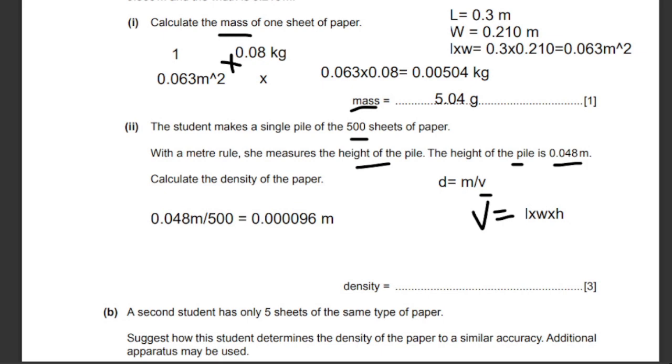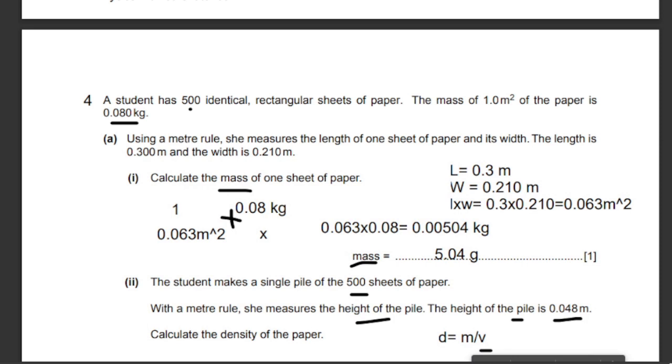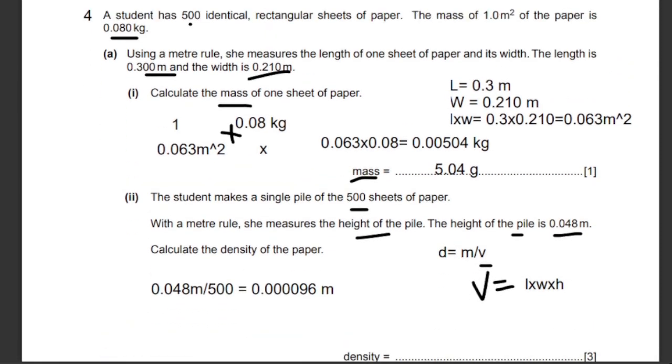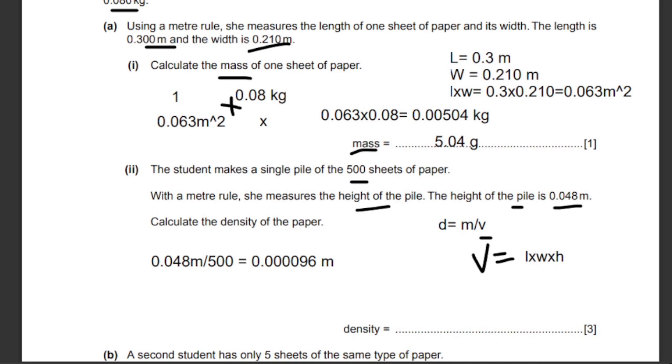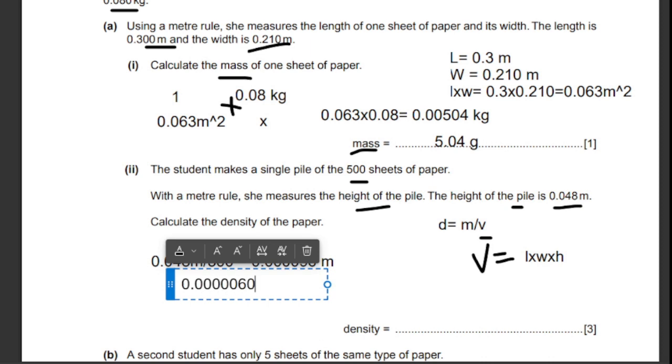Now I'm going to calculate the volume of the whole paper by going upwards and taking these values of the length and width and multiply the whole thing together. 0.3 times 0.21 times the value we just got right now, and we will get a value of 0.00006048 meters cubed.